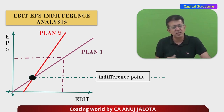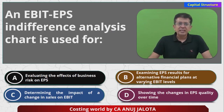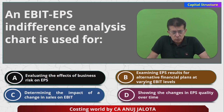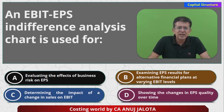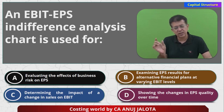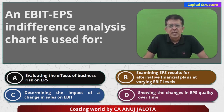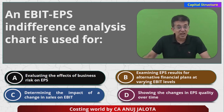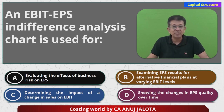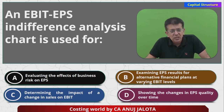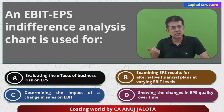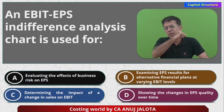You can do the same for Plan Two as well — the graph keeps telling you what EPS will be at any given EBIT. Coming back to the question: an EBIT-EPS indifference analysis chart is used for — Option A, evaluating the effect of business risk on EPS, is incorrect because it doesn't measure business risk impact. Option B, examining EPS results for alternate financial plans at varying EBIT levels, is correct — that's exactly what the chart does. Options C and D only talk about either EBIT or EPS individually, not both. So the answer is B.